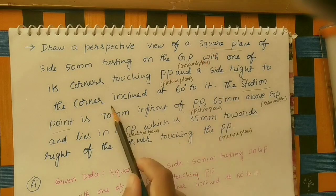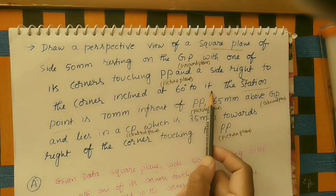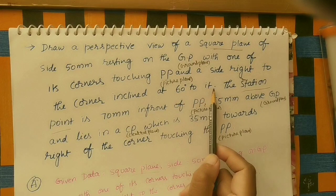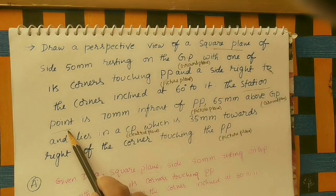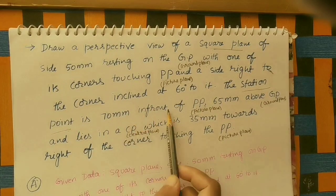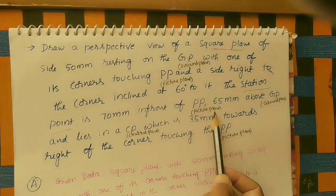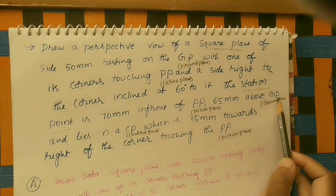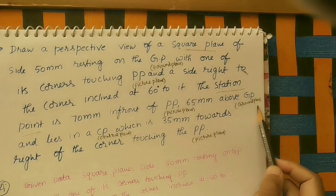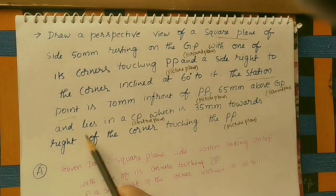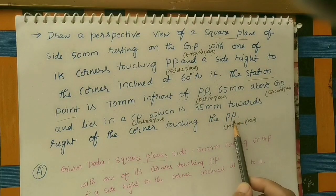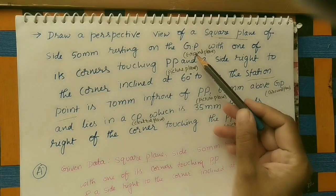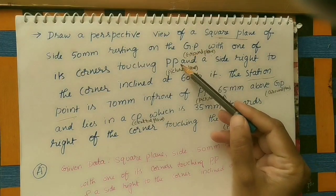A side adjacent to the corner touching PP is inclined at 60 degrees to the picture plane. The station point — that is, the observer — is 70 mm in front of PP, 65 mm above GP (ground plane), and lies in a CP (central plane) which is 35 mm towards the right of the corner touching PP.